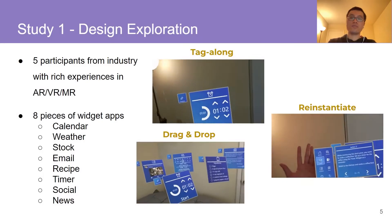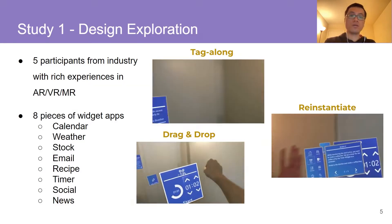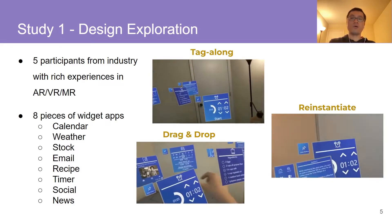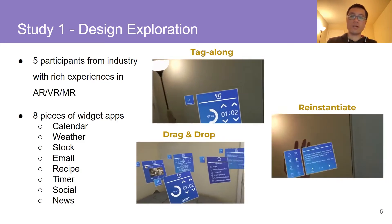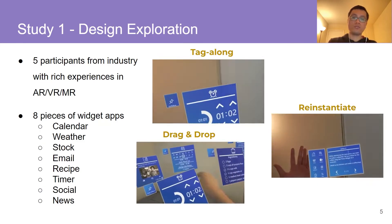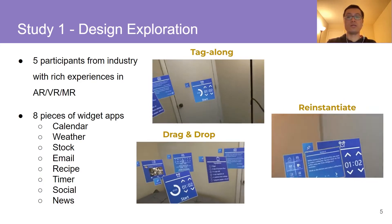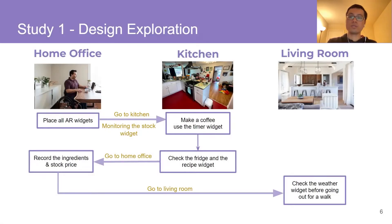To understand the challenges with current UI transition mechanisms, we conducted a body-storming design workshop. We recruited five participants from the industry with rich experience in AR, VR, and MR. We built a prototype application on Microsoft HoloLens 2, in which participants had access to eight widget UIs to assist their daily tasks, and we implemented the three existing solutions mentioned earlier to transition these UIs to different locations.